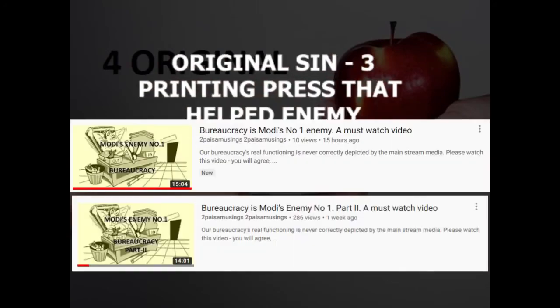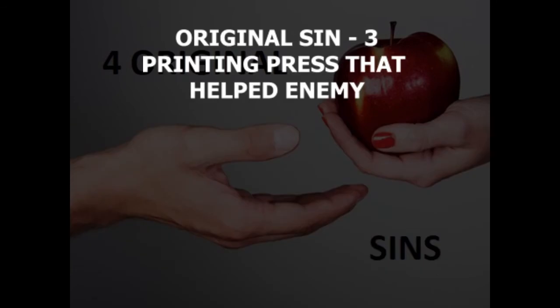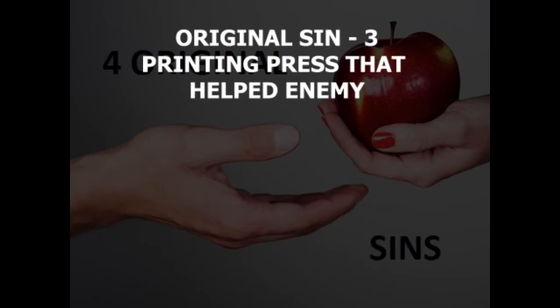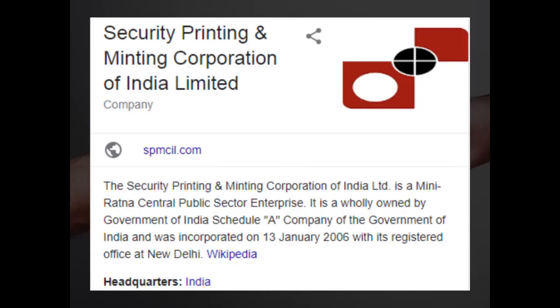Original sins. I have covered bureaucracy's love for babies in two videos. This baby is unique. Printing of notes was the exclusive domain of RBI. Bureaucracy went to work and produced SPMCIL in 2006.